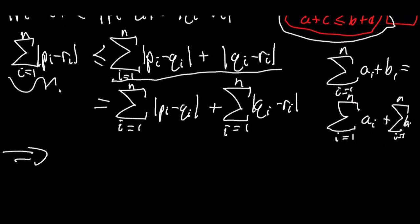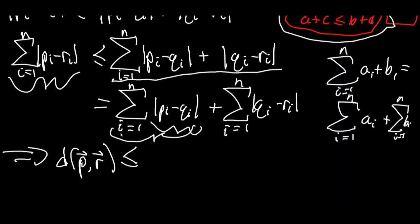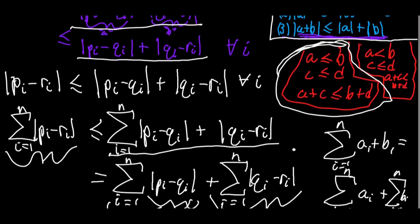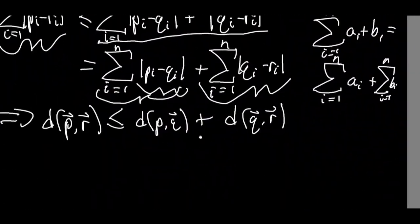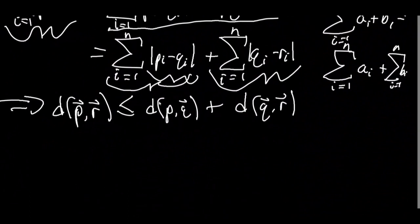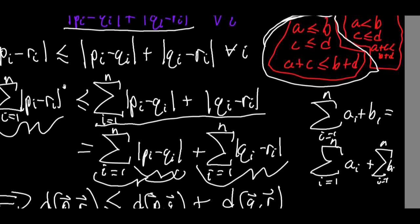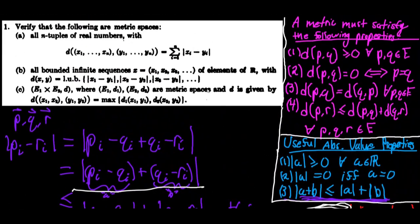We've proven the triangle inequality: for any vectors p, q, and r, the distance between p and r is less than or equal to the distance between p and q plus the distance between q and r, as defined by this metric. Since we've now proven all four properties, this metric satisfies the definition of a metric, and we've completed the problem.